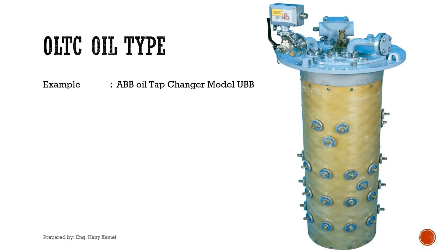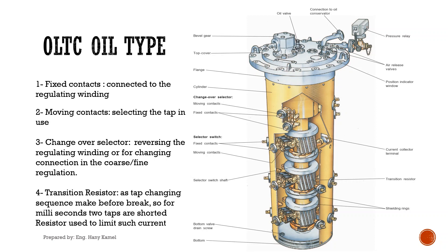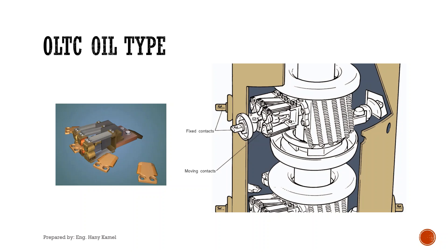On-load tap changer — I will start with OLTC oil type. I will select ABB oil tap changer model UBB as an example. The on-load tap changer main parts: fixed contacts, which are connected to the taps of the regulating winding; moving contacts, which will select the desired tap of the fixed contacts; changeover selector, used in regulating winding reversing application and in coarse-fine application — I will talk in detail about these applications in another video. Transition resistor: as the tap changing sequence is make-before-break, for a few milliseconds two taps are shorted to maintain the load, and the resistor is used to limit the short circuit current in the two shorted taps. In these pictures we can see the fixed contacts and the moving contacts.